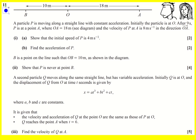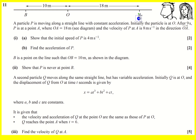In this question, we're told that we have a particle P moving in a straight line with constant acceleration along this straight line. Initially it's at O, and then after nine seconds it's at A, where OA is 18 meters. The velocity is 8 meters per second in the direction OA, so it's going to the right. We're asked to show that the initial speed is 4 meters per second.